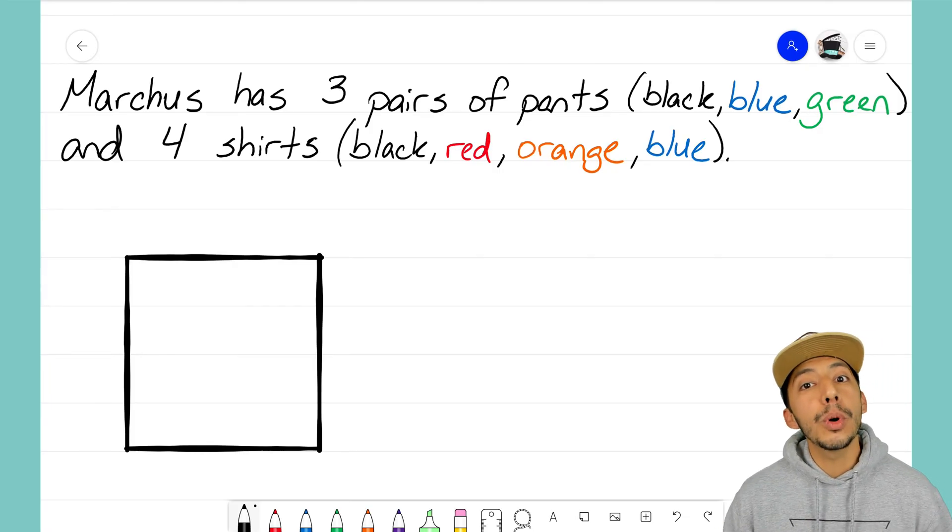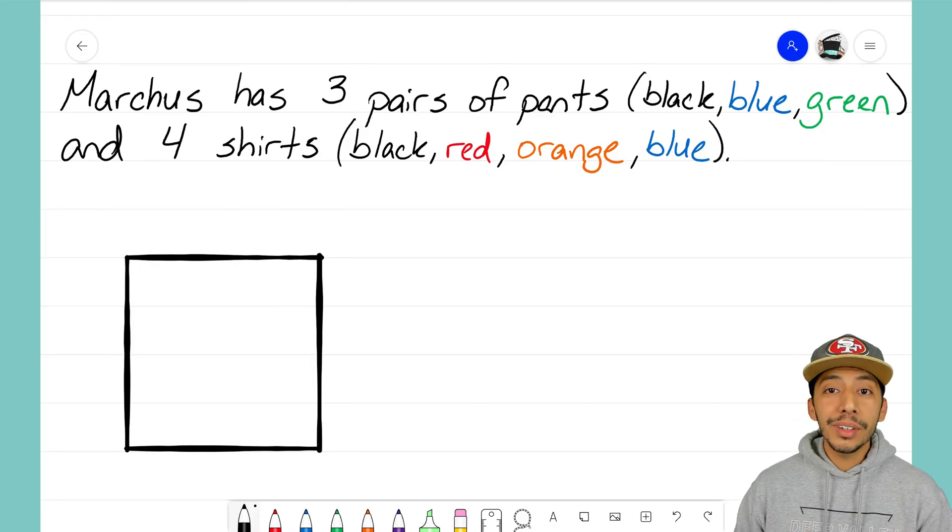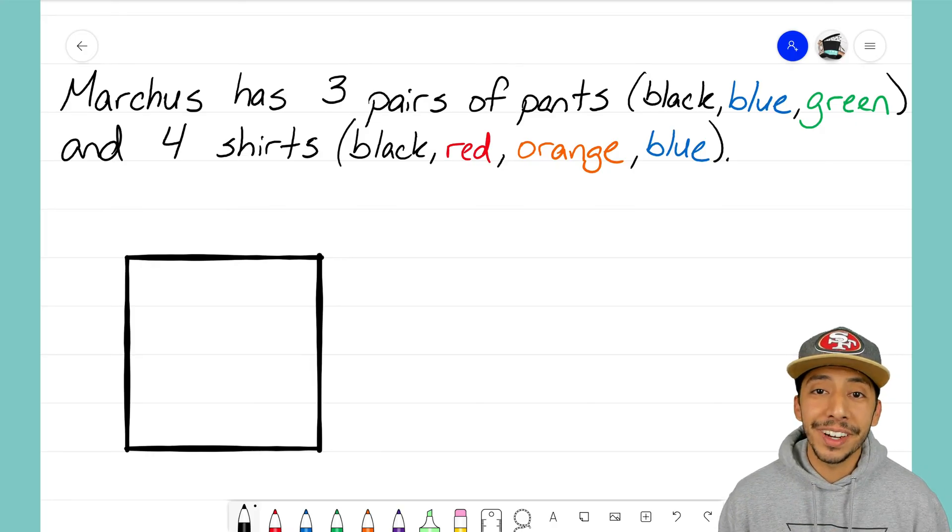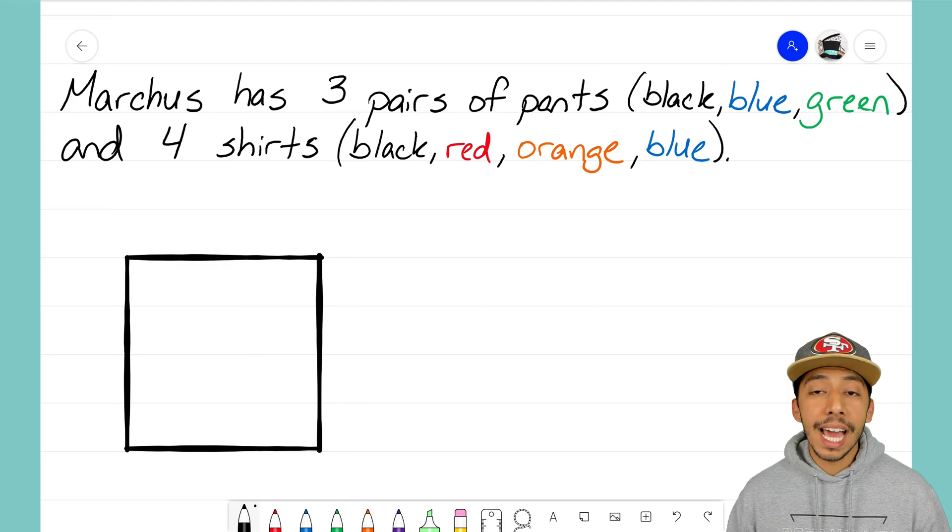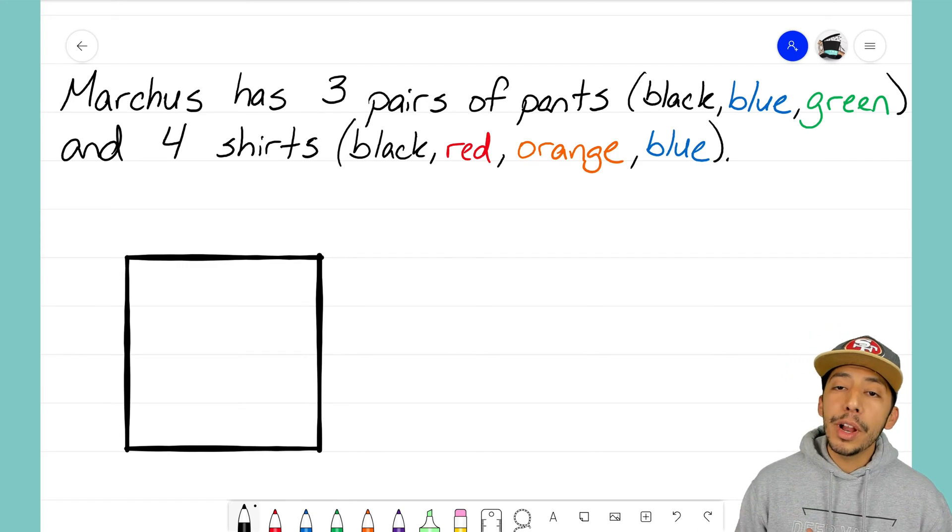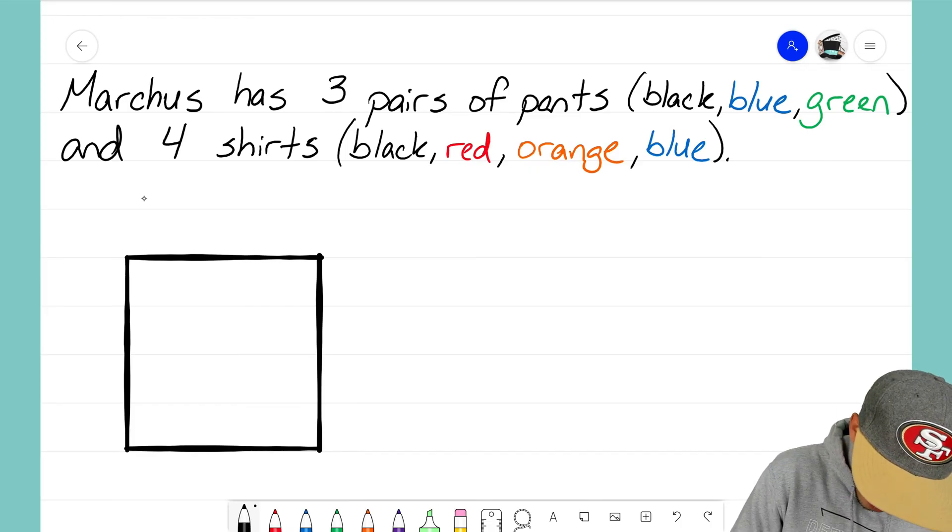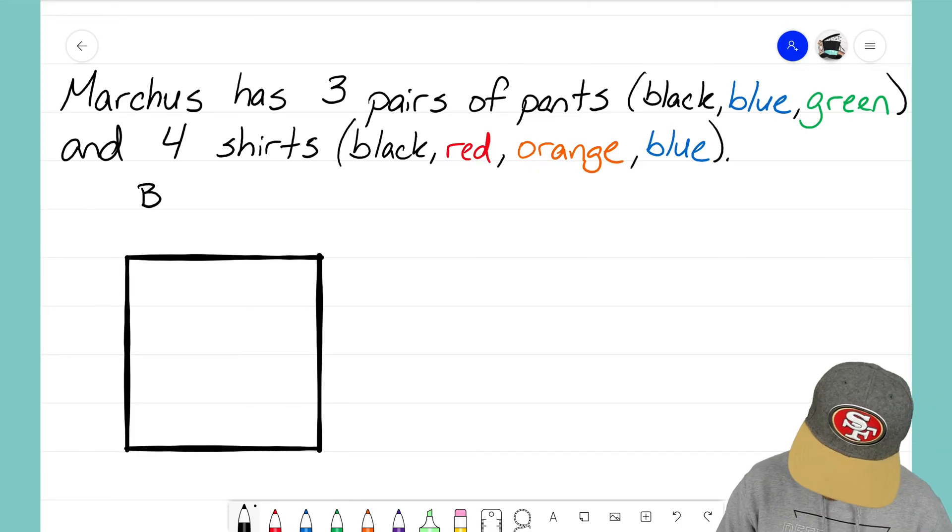For an area model, I'm going to need that rectangle over there, and I need to first set up the sides to showcase my two options. The first thing he might pick is a pair of pants, so I'm going to label the top with those three colors for his pair of pants. He can either use black, he can then use blue, or he might pick green.